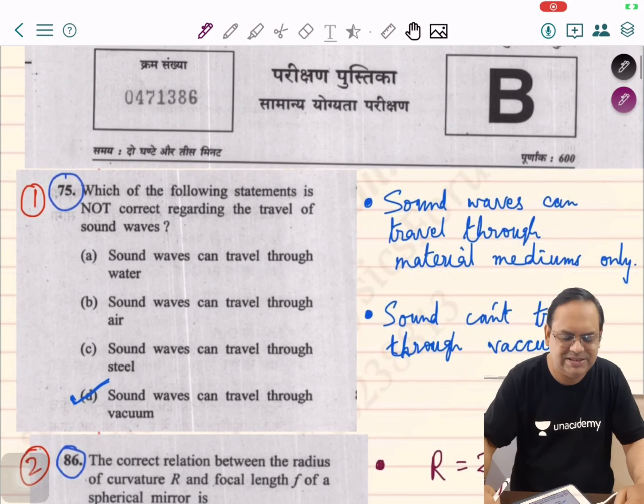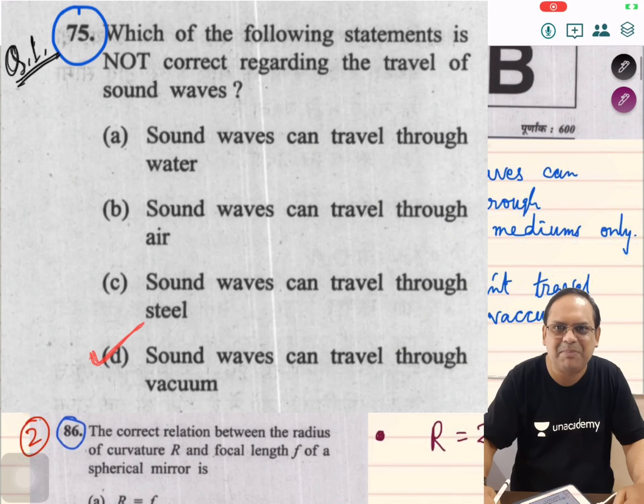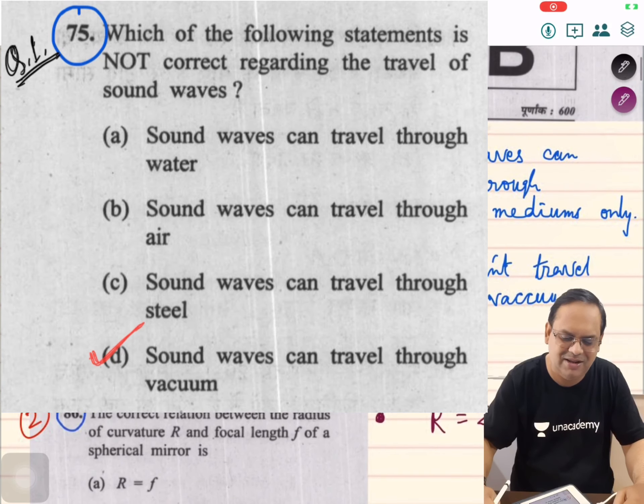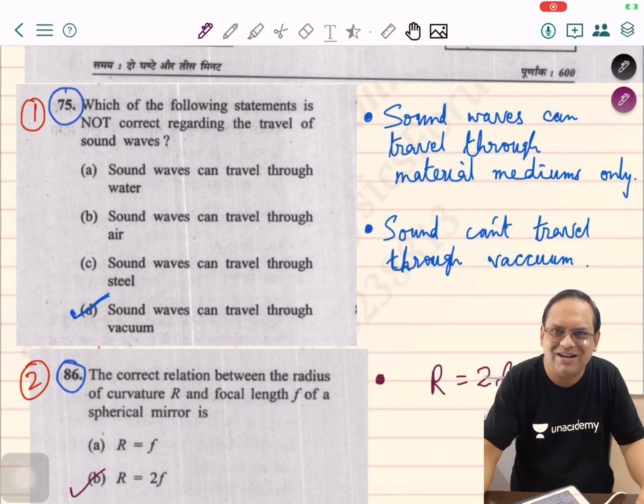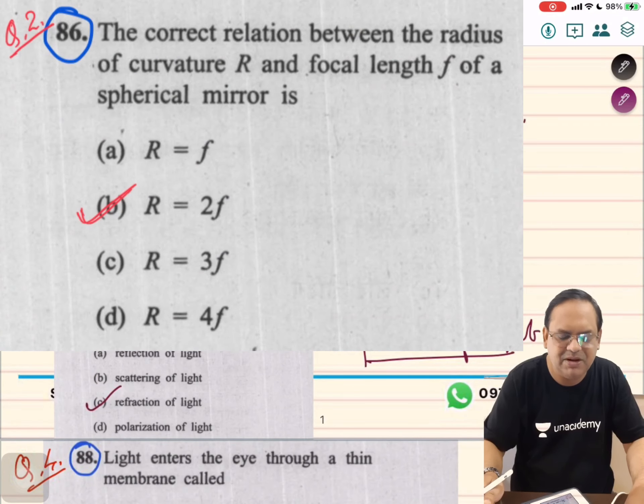Question number 75, which is the first question of physics. Which of the following statements is not correct regarding the travel of sound waves? It needs a material medium to travel in vacuum.